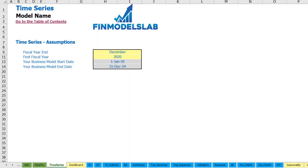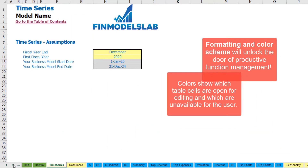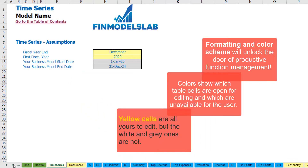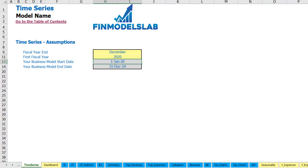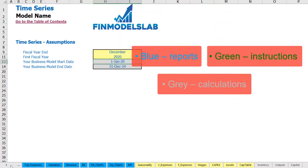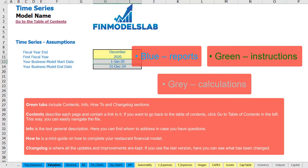The color coding is simple: any yellow cell in any yellow sheet is changeable and contains an input assumption or driver that impacts the model's calculations. Blue sheets contain charts, reports, and other information useful for reporting purposes. Tabs without color contain extra calculations related to revenue, debts, equity, inventory, and other items needed for reporting.